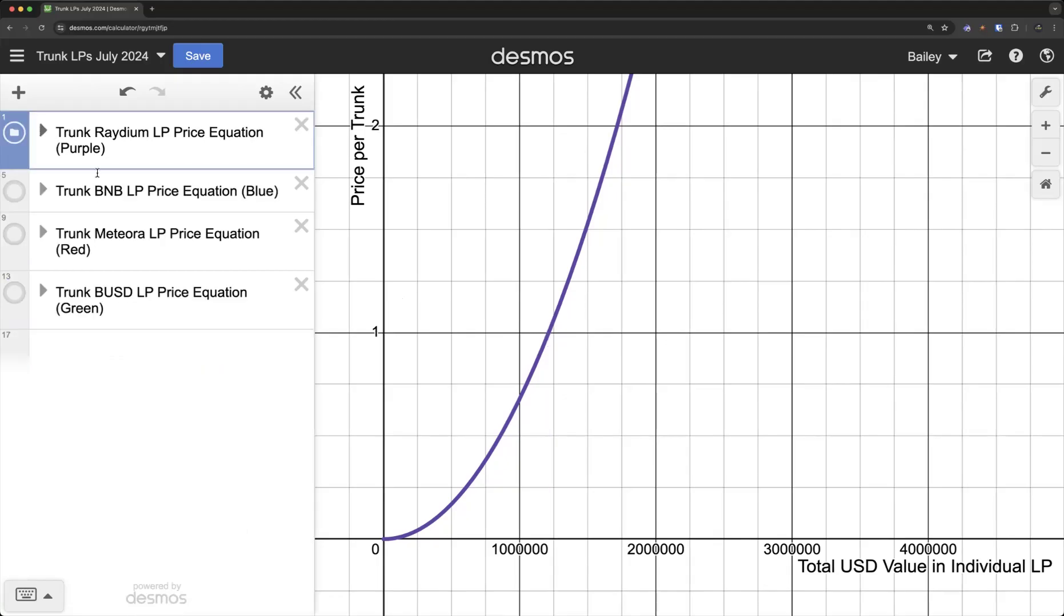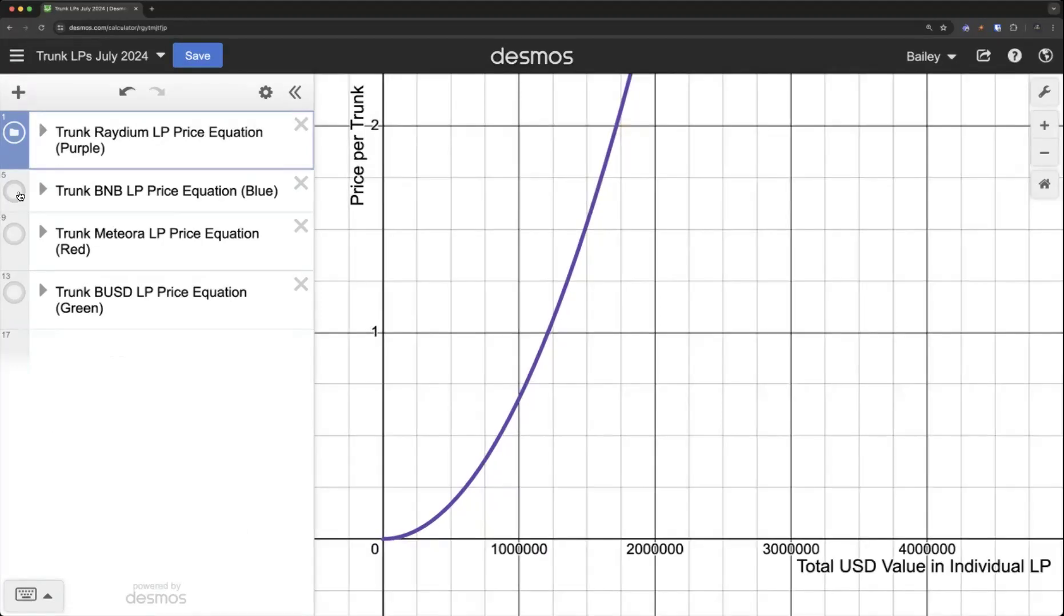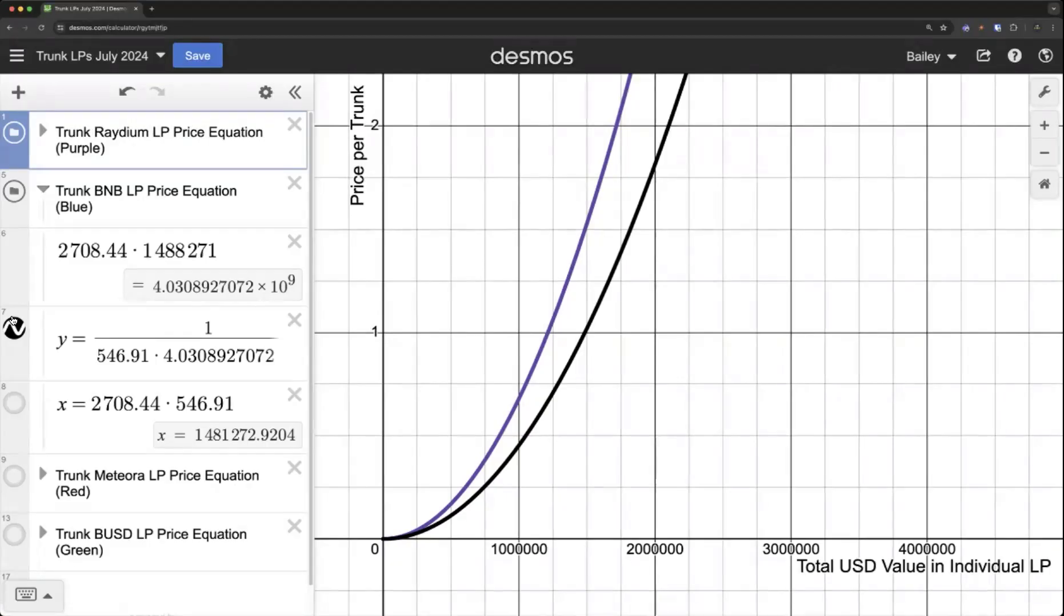And then we have our second pool. Our second smallest pool is the trunk BNB liquidity pool. That's on the Binance Smart Chain. And that should be in blue. I put blue there.